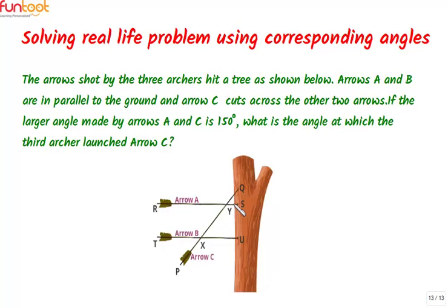This is arrow A by the first archer, arrow B by the second archer, and arrow C by the third archer. Arrows A and B are parallel to the ground and arrow C cuts across arrows A and B.